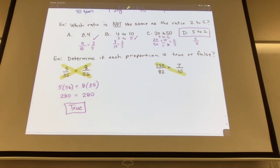Any time you're doing a comparison with proportions, you cross multiply. You're going to have 120 times 10 there, 82 times 7. 120 times 10 is 1200, and 82 times 7 is 574. So, false.